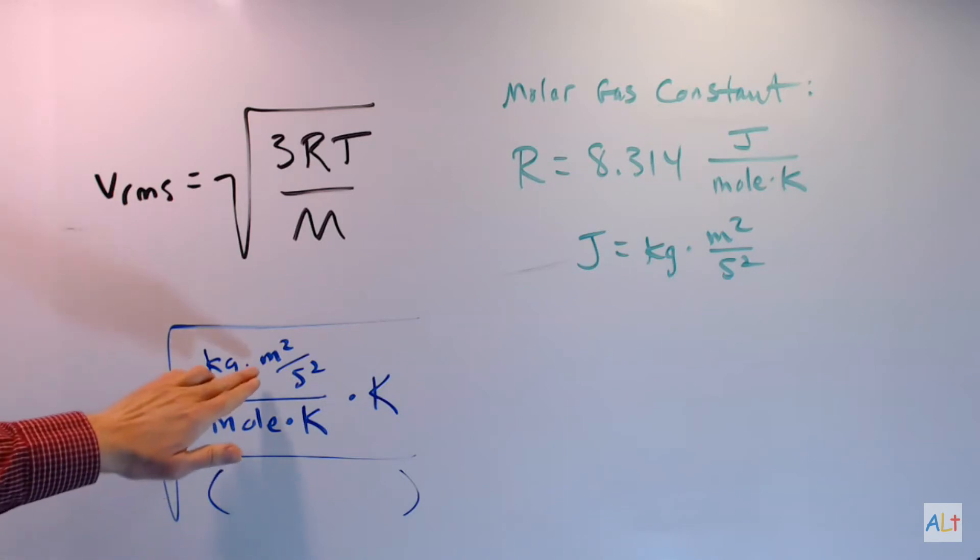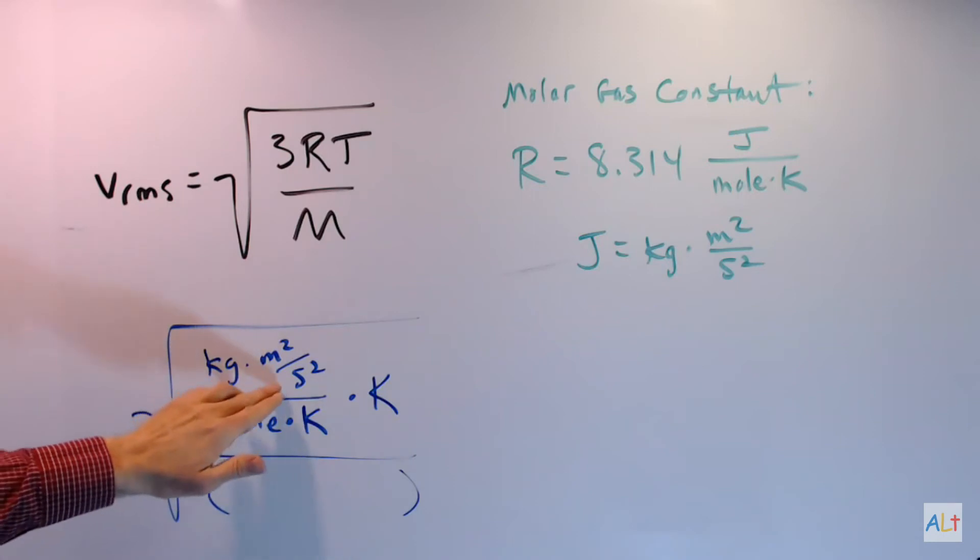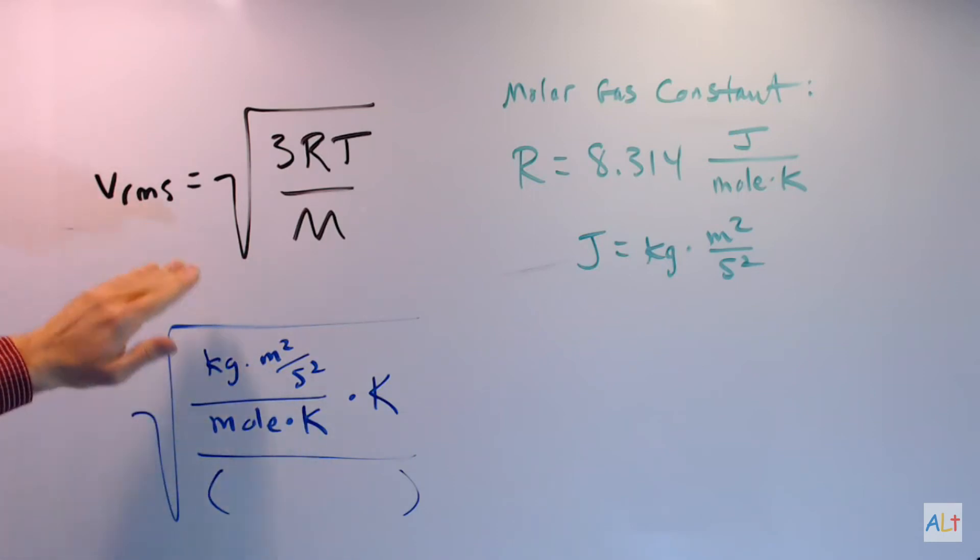Now, you can see we have meters squared over second squared. And when we take the square root of all of that, we will get meters per second, which is what we want. So we want to keep the meters in seconds, but we want to cancel out everything else. Well, the kelvins will cancel straight away. We're left with kilograms and moles. To cancel those, we need this.